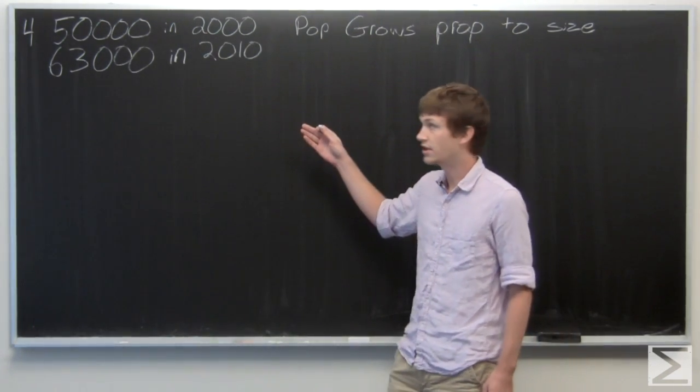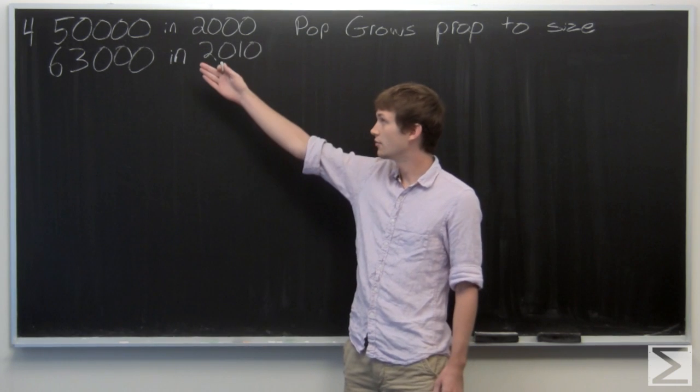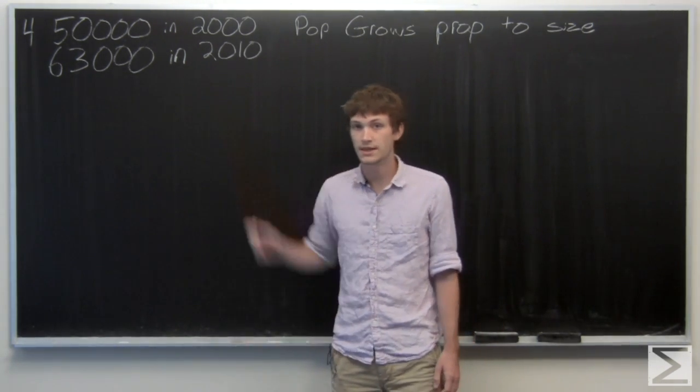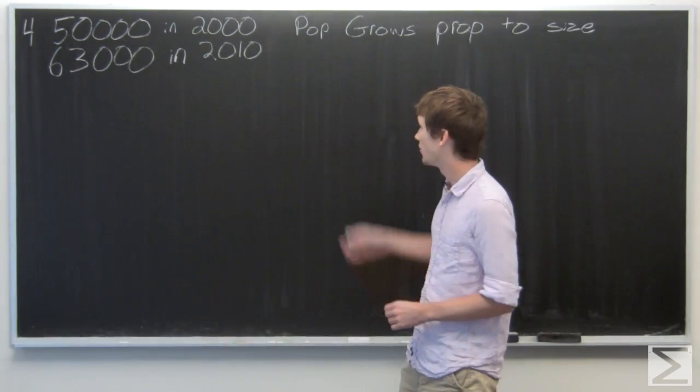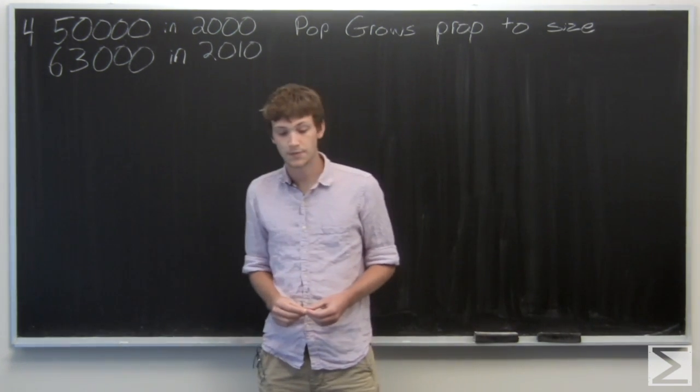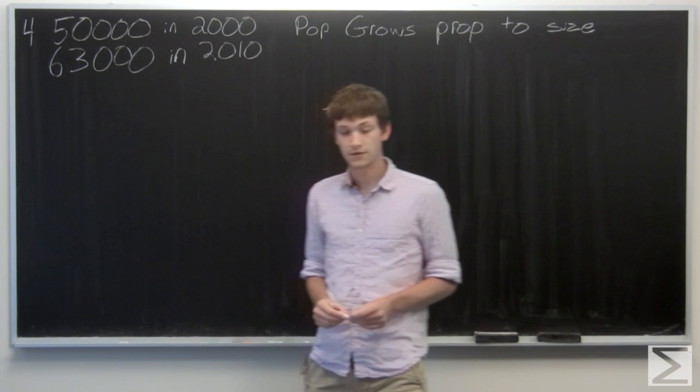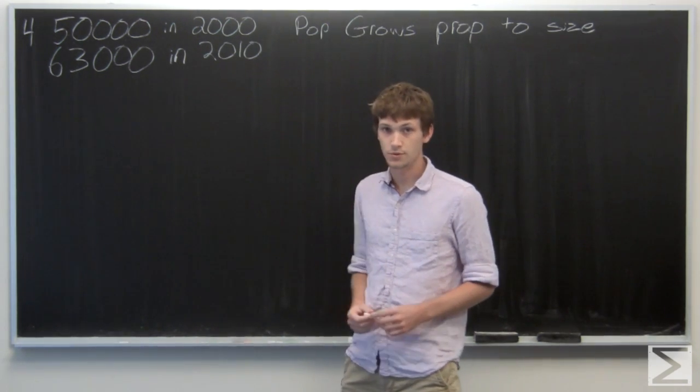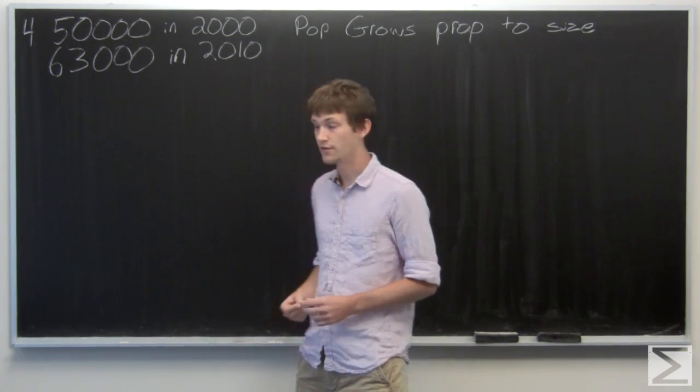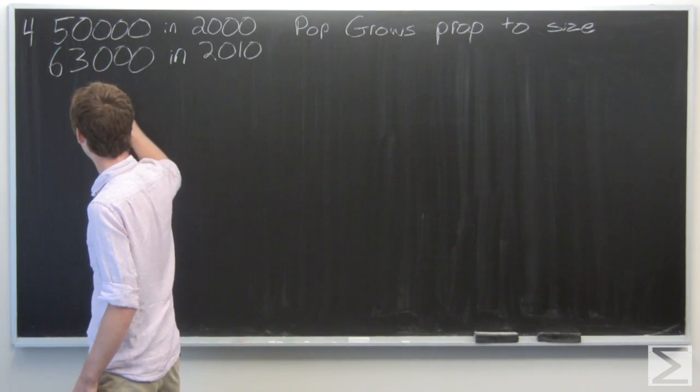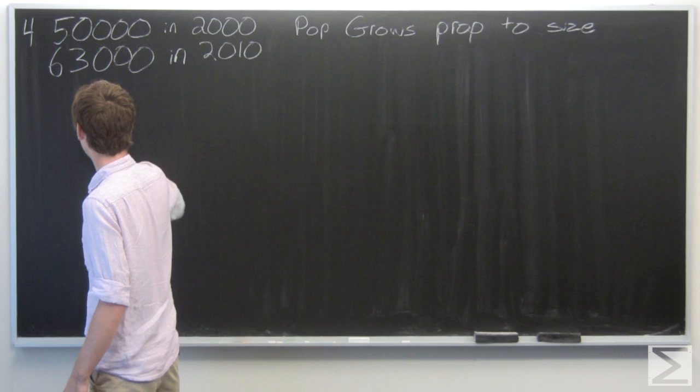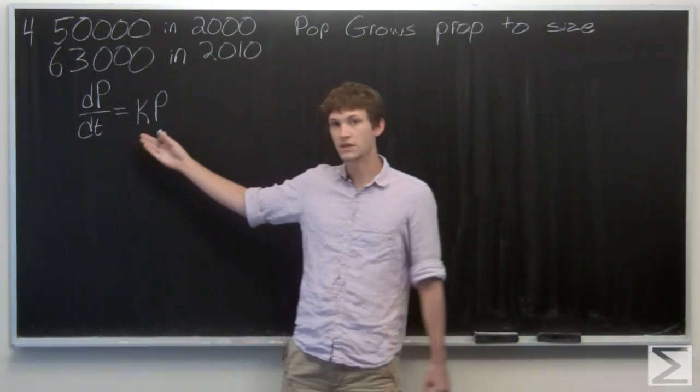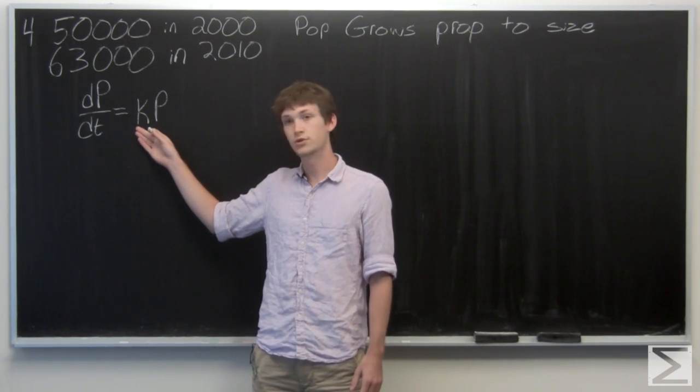In this problem we're looking at population. We're given the population in the year 2000 is 50,000, the population in the year 2010 is 63,000, and we know that the population grows proportional to its size. We're asked to find the population in the year 2011. Since we know that the population grows proportional to its size, we can write the following differential equation, saying that the change in population has some proportional constant k times population.